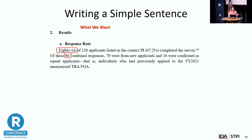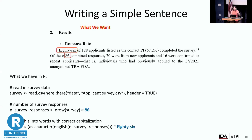We'll use this simple sentence as an example: '86 of 128 applicants listed as the contact PI completed the survey, and of these 86 combined responses, 70 were new and 60 were repeat.' In R, we read our survey data in — the survey is formatted so each respondent is one row. We take the number of rows, which gives us 86. Then we use the English package and the English function to take that numeric 86 and turn it into words. It is still a numeric value after using the English function, so we also have to turn it into characters and then capitalize the first letter to get 'Eighty-six.'